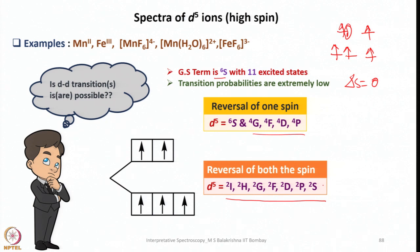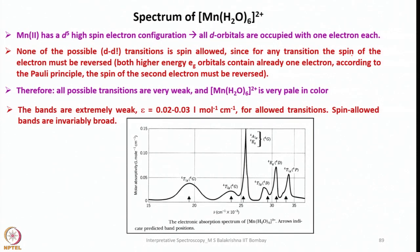In this case, transitions are very weak. The spectrum looks like this for hexa-aqua manganese 2+. Manganese 2+ has a d5 high spin electronic configuration, all d orbitals occupied with one electron each. None of the possible d-d transitions is spin allowed since for any transition the spin of the electron must be reversed. Both higher energy eg orbitals contain already one electron, so according to Pauli's principle the spin of the second electron must be reversed.